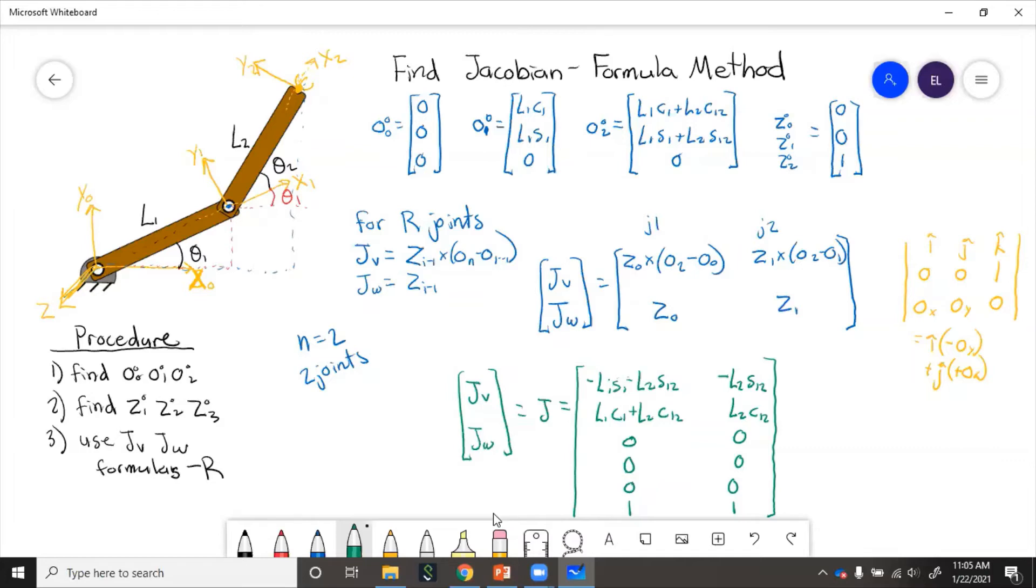But here, this robot can only move in x and y. So really, the Jacobian needs to be a two by two. So we just get rid of all that bottom junk because it doesn't actually matter.